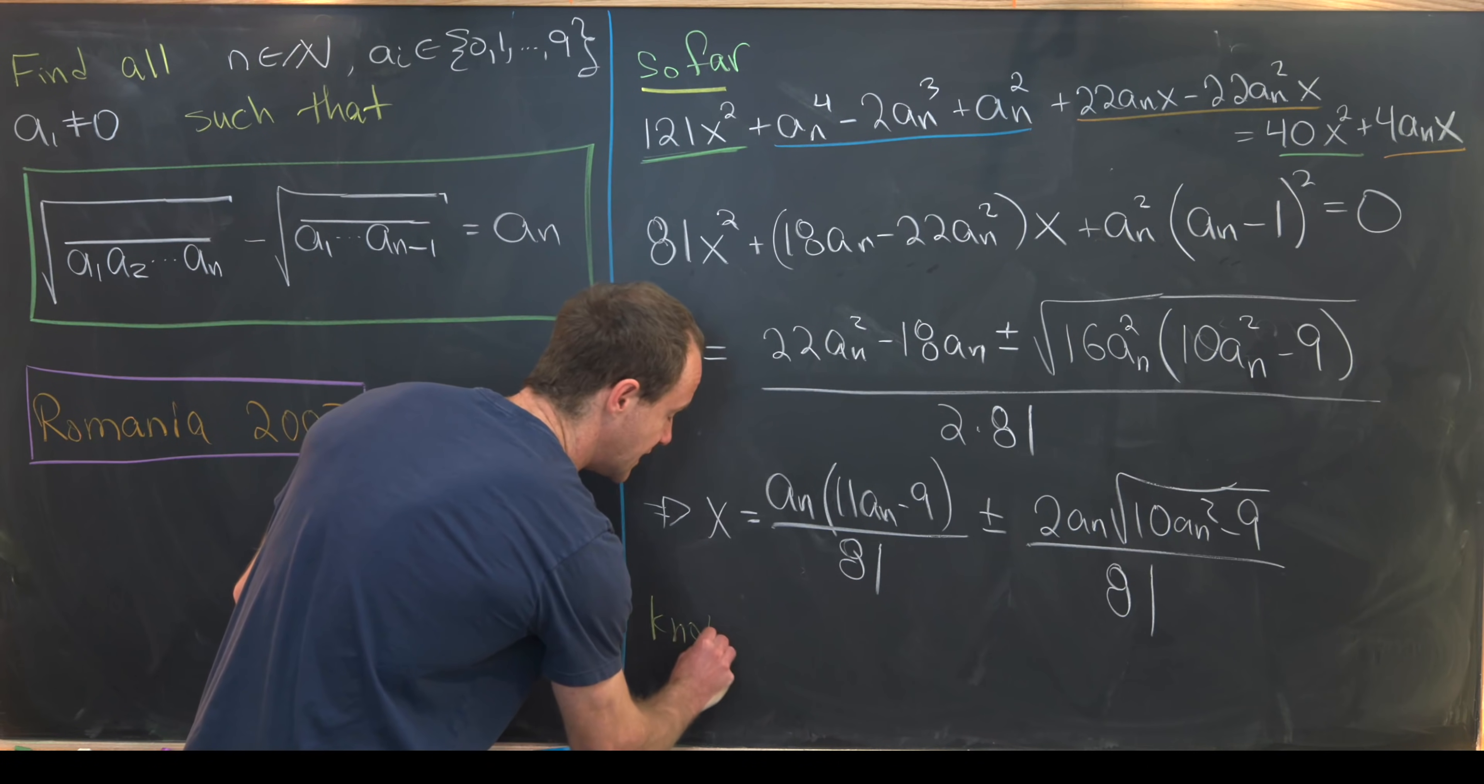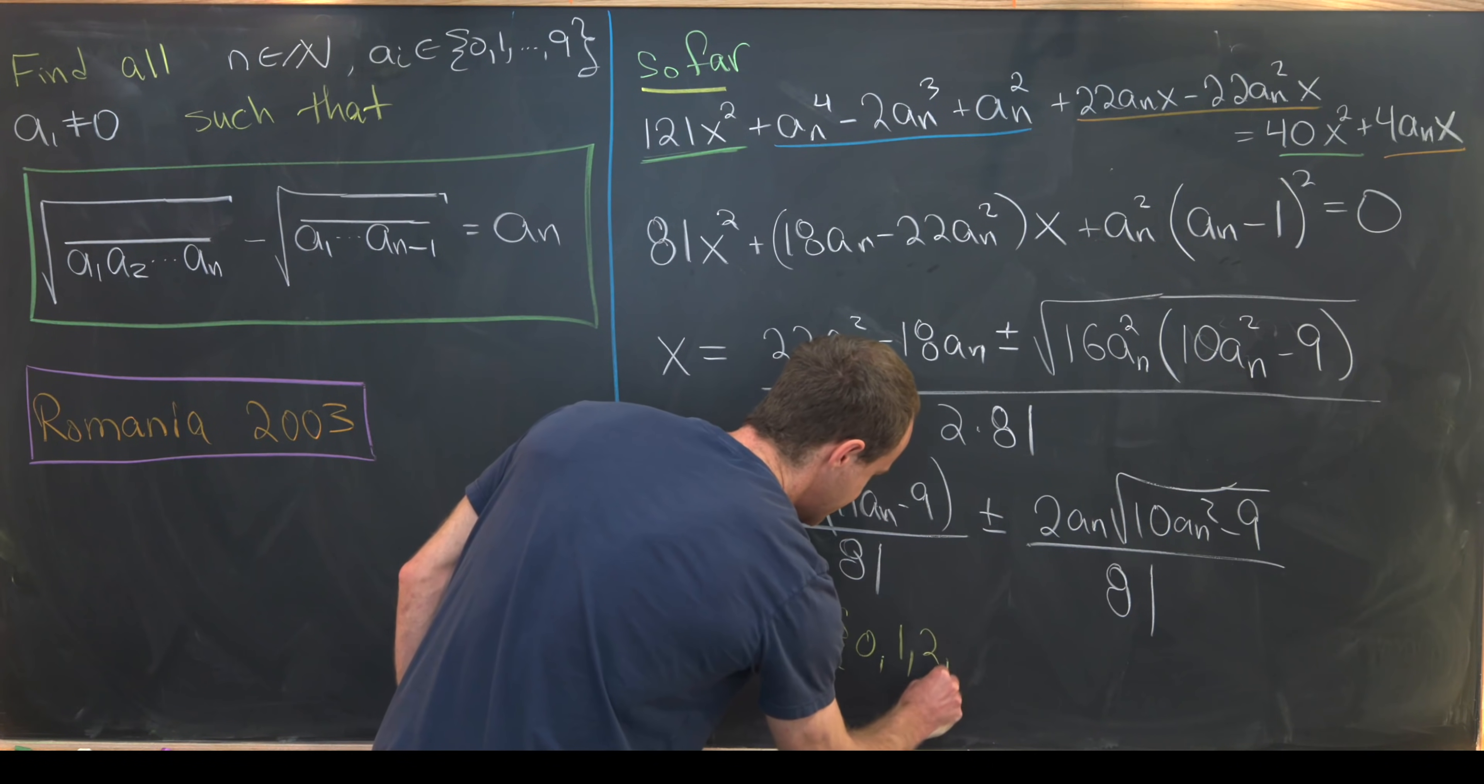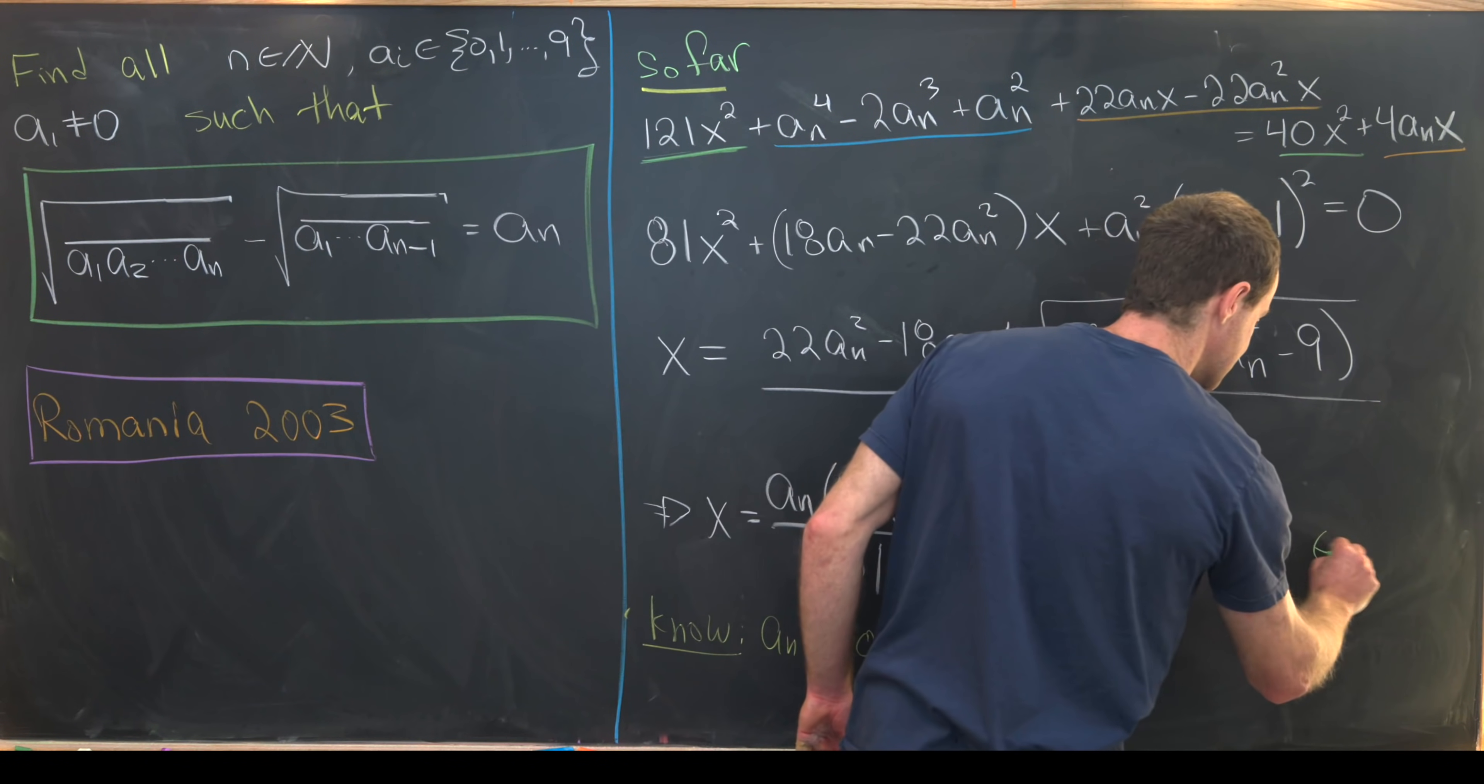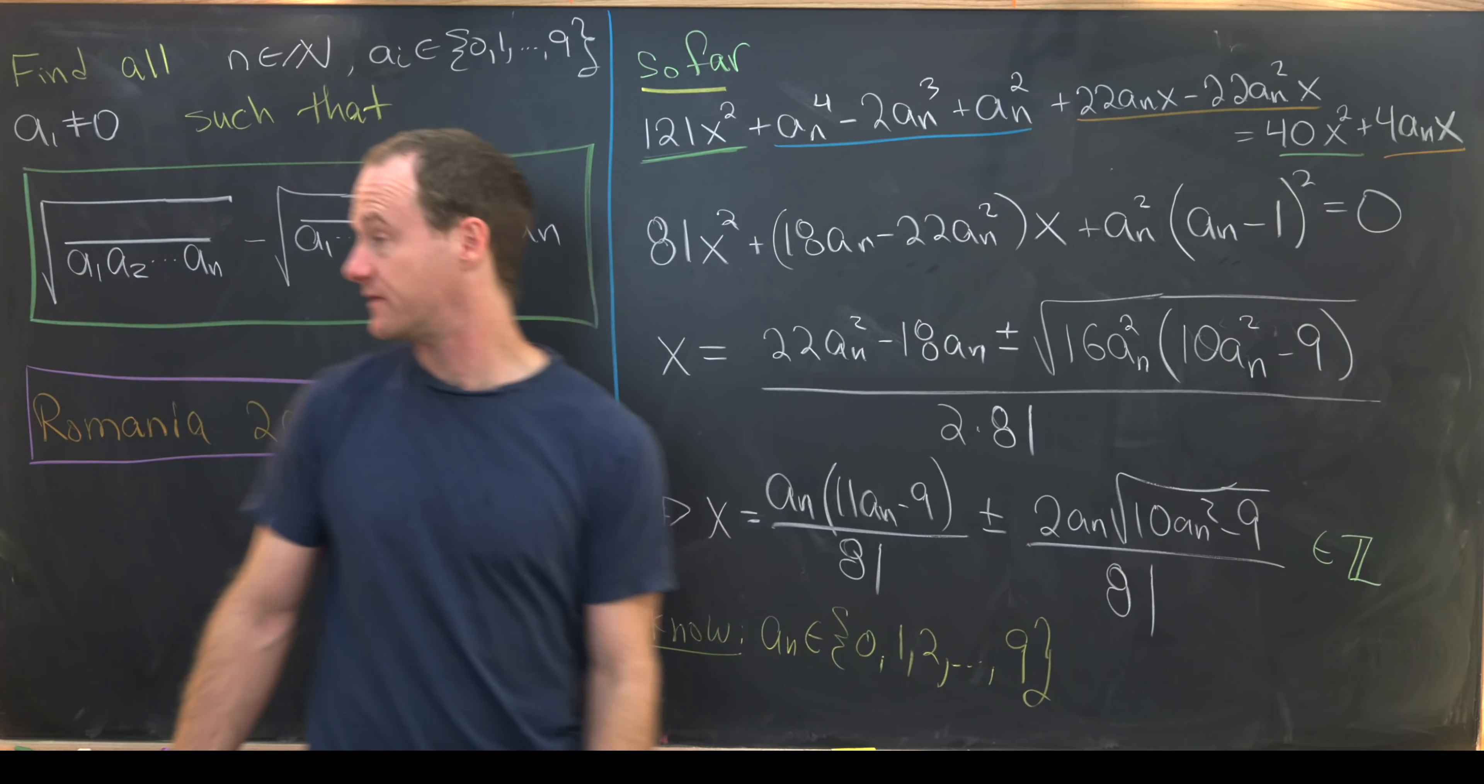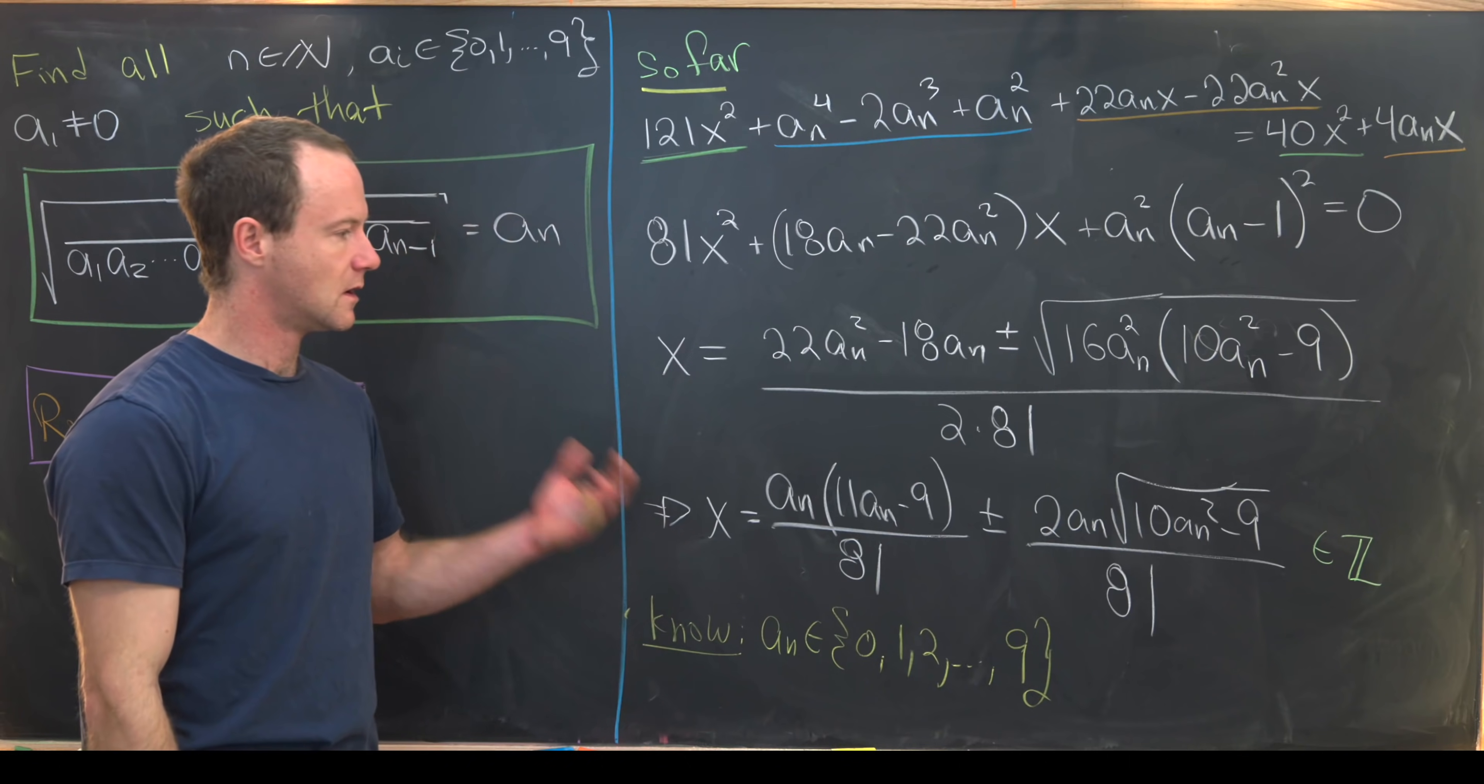So let's recall that we know the following fact. We know that an must come from the set 0, 1, 2, up to 9. Another thing that we know is that this value of x is most definitely an integer. Well, it's actually a positive integer. That's just the way that it's formed, how we defined our x. Remember, x was this guy right here.